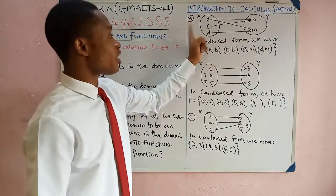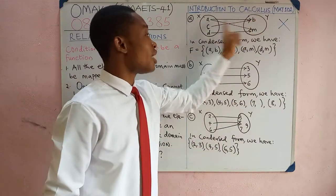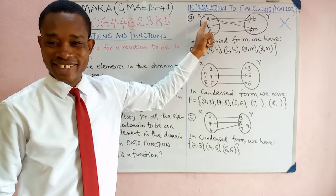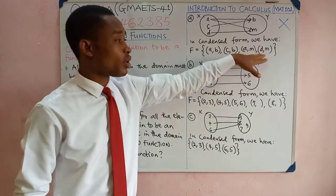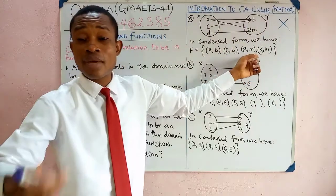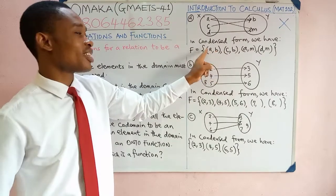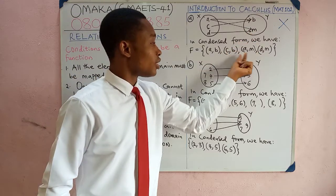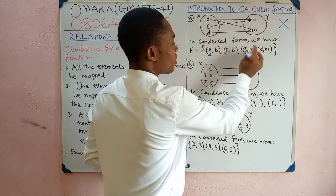So let us look at these examples. The first one: is it a function? No, it is not a function. Look at son A — mapped to father B and again mapped to father M. It is not possible for a son to have two biological fathers. You can see the condensed form; sometimes you see them in condensed form or in equation form. The first is your domain, the second is your co-domain — son and father. Son A having father B, and son A having father N — that is not possible. The second example: is this a function? No, it is not. There are some elements from the domain that were not mapped, violating the first condition — a son existing without a father is not possible.